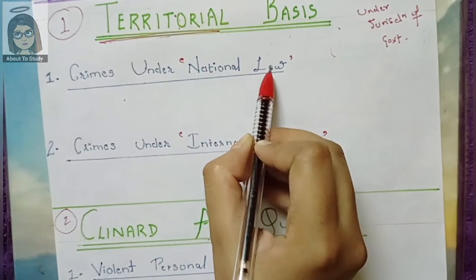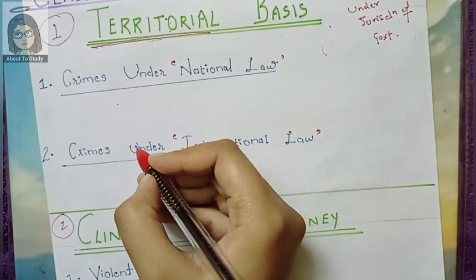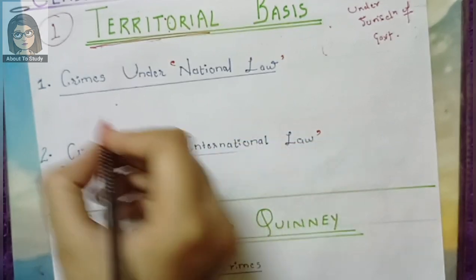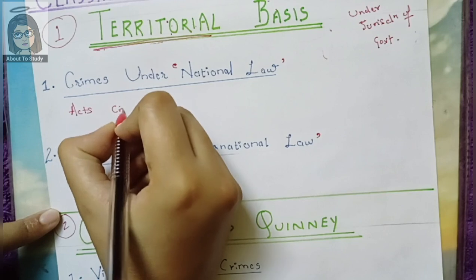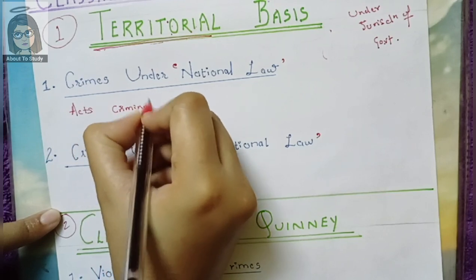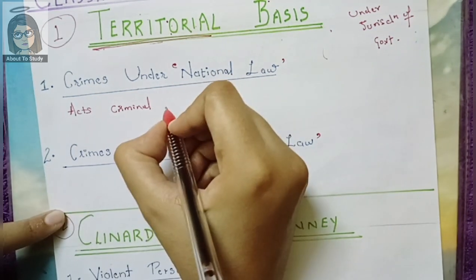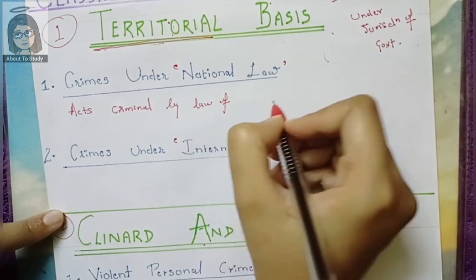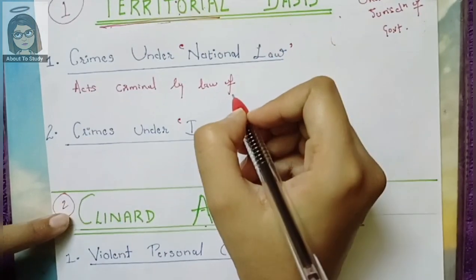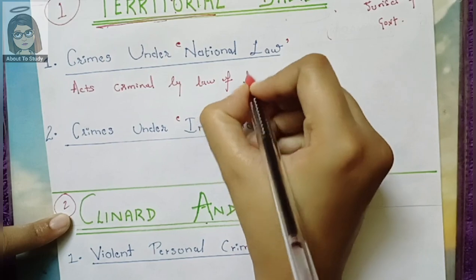Under national law means that these laws are concerned with the domestic affairs of a state — within the state, meaning a country. Acts that are criminalized or are considered criminal by the law of a land, of a certain area. So within a nation, it's about this — the crimes within a nation.